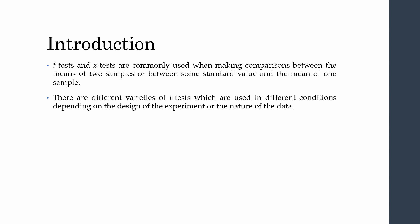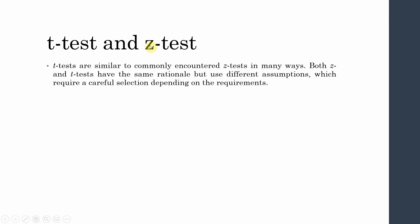There are two different varieties of t-tests, used in different conditions depending on the design of the experiment or the nature of the data. T-tests are similar to the commonly encountered z-test in many ways. Both z and t-tests have the same rationale but use different assumptions, which require careful selection depending on the requirements.